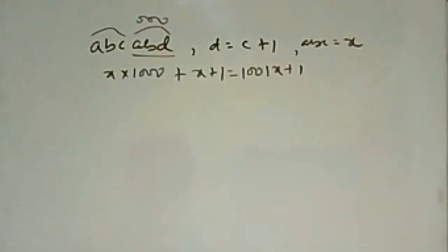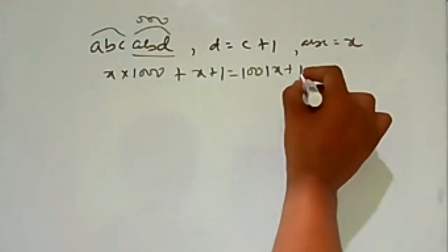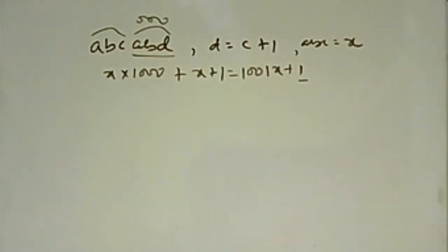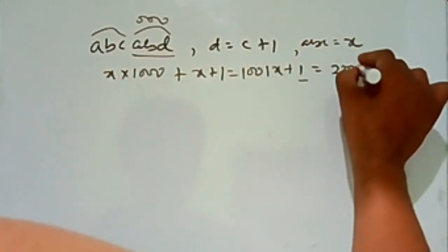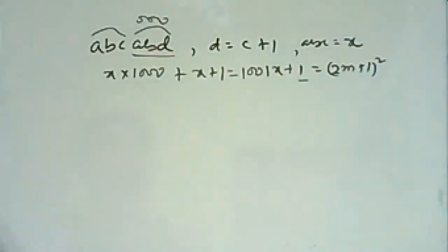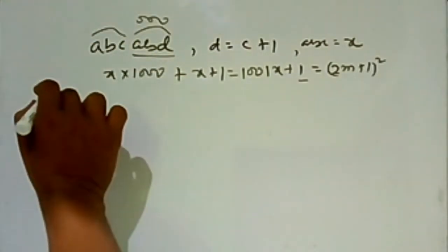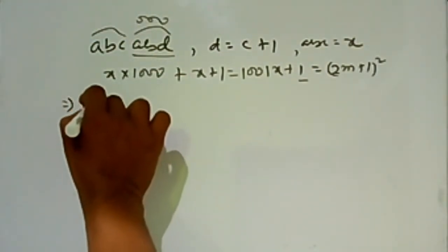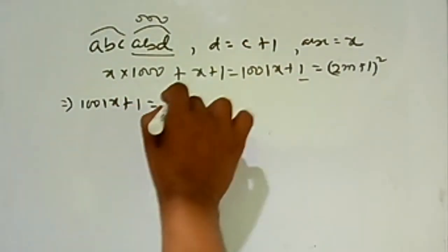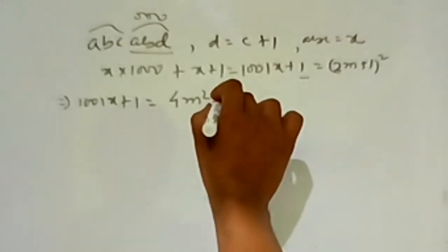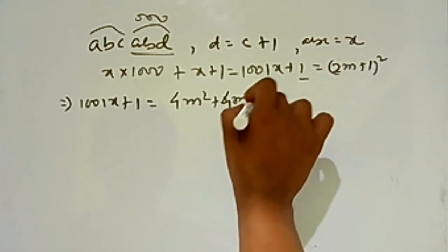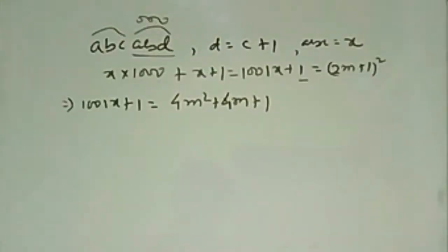This expression 1001x + 1 is a perfect square. Let's assume it is an odd perfect square, so let it equal (2m+1)². Expanding: 1001x + 1 = 4m² + 4m + 1.